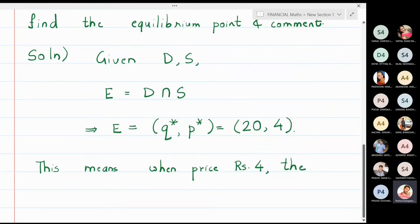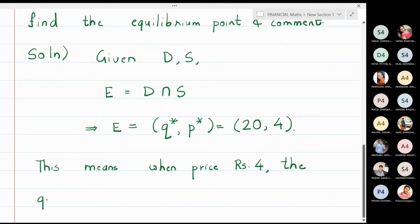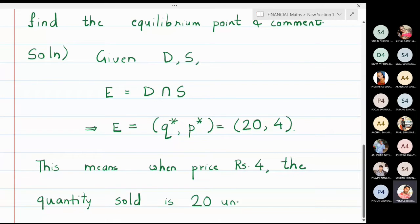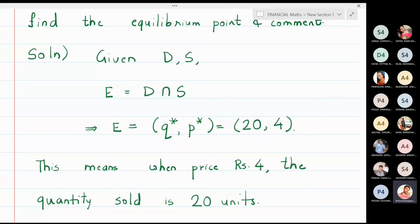At price P*, the quantity sold in the market is 20 units. This means at 4 rupees, people are going to buy 20 units, and at this point demand and supply are the same. This is the situation before the tax is imposed.